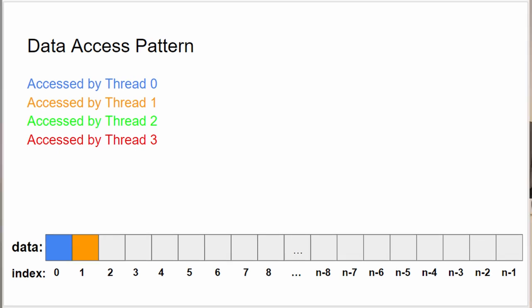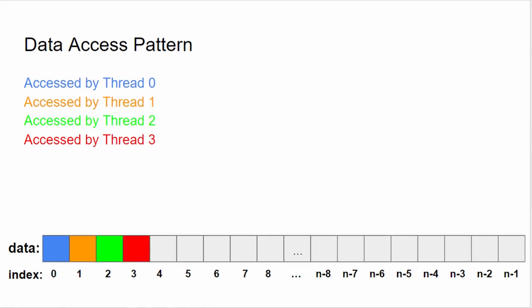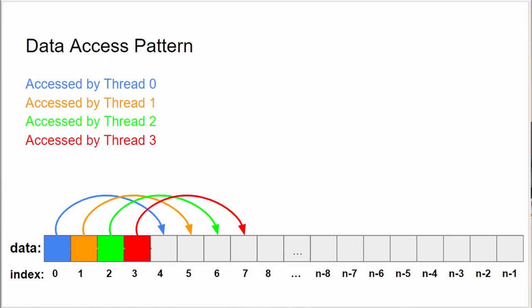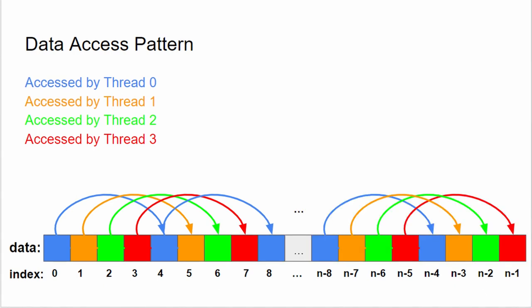Then thread 1 writes 0 to data[1], which again invalidates everyone's cache entry. This cycle continues and you don't have as good performance until some threads diverge due to OS scheduling or other reasons. In the experiment I tried forcing this exact scenario by using thread barriers.